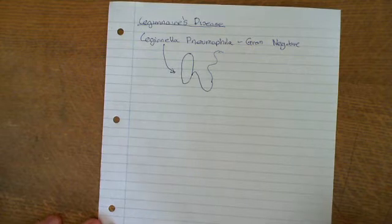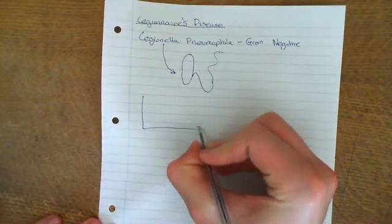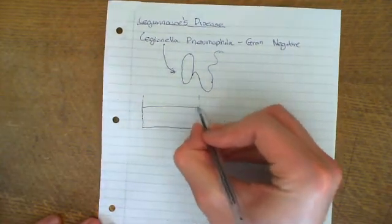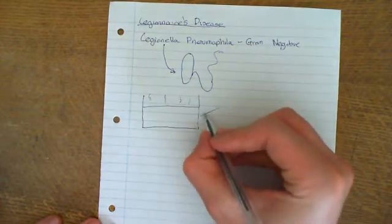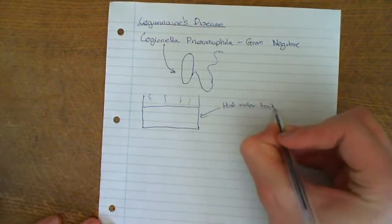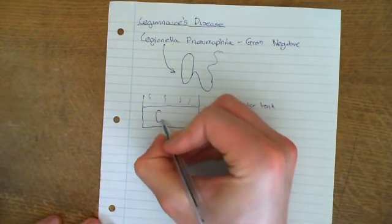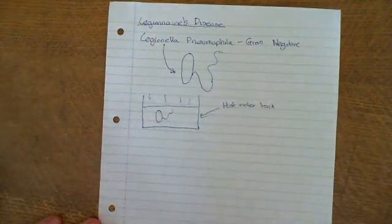Legionella Pneumophila likes to grow in hot water. If you've got a hot water tank, I'll draw a water tank with hot water and steam coming off. Legionella likes to grow in here, so you end up with lots of Legionella in this water tank.